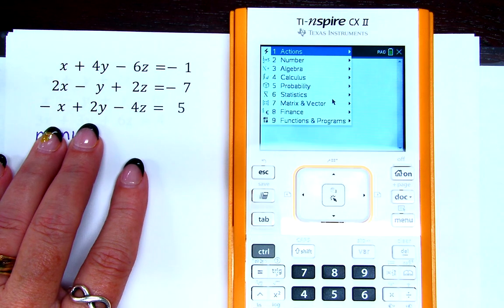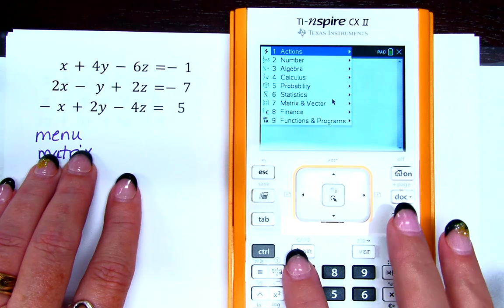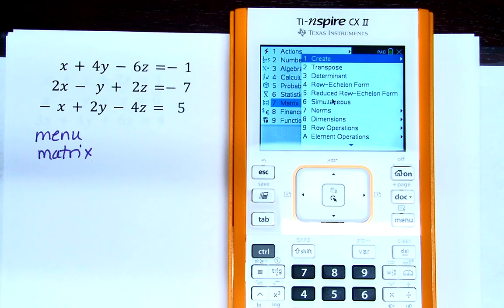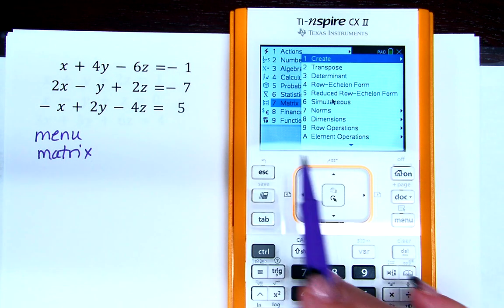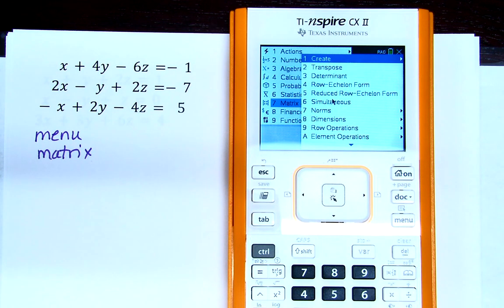We're going to hit menu and then matrix. Does everybody see it? After we hit menu and matrix, there's another order that you can do this in. I'm showing you the order that's the fastest. I'm not saying my way is the only way to do it. I'm saying I think it's the fastest.